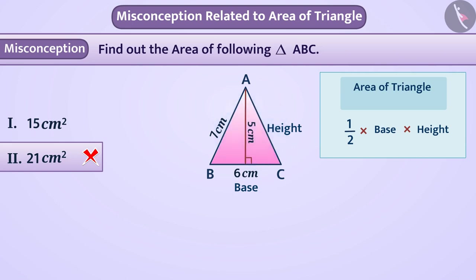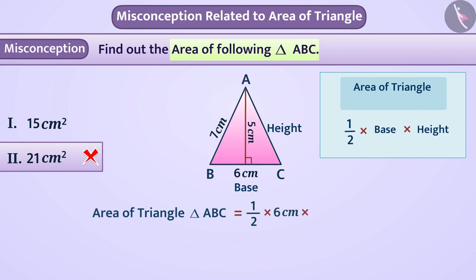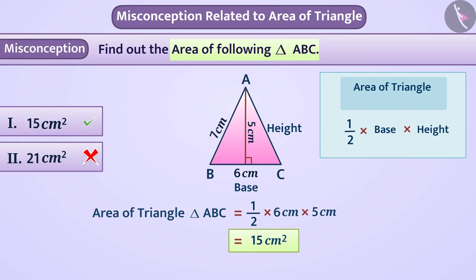Therefore, the area of triangle ABC is half multiplied by 6 centimeter multiplied by 5 centimeter, which is equal to 15 square centimeter. That is, option 1 is the right answer.